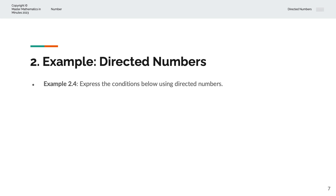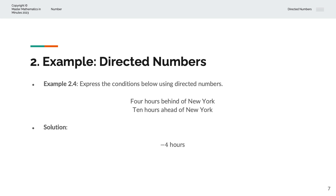In the fourth example, we're asked to express the conditions below using Directed Numbers. We have 4 hours behind New York and 10 hours ahead of New York. So the answer is minus 4 hours, where the minus sign indicates that we're behind New York, and positive 10 hours, where the positive sign indicates that we're ahead of New York.